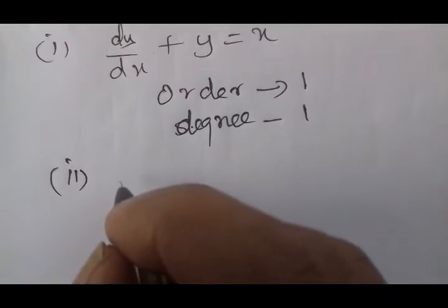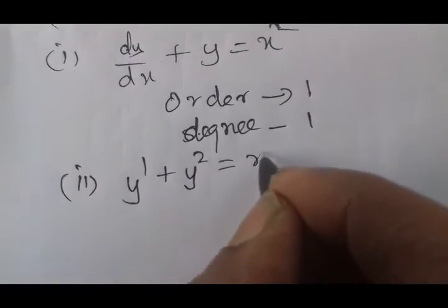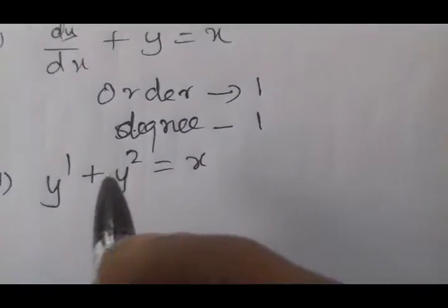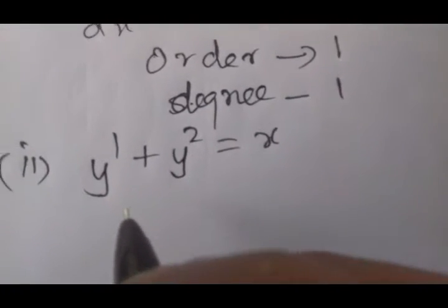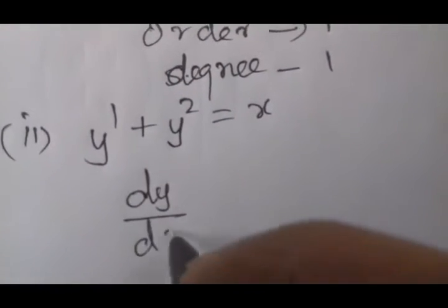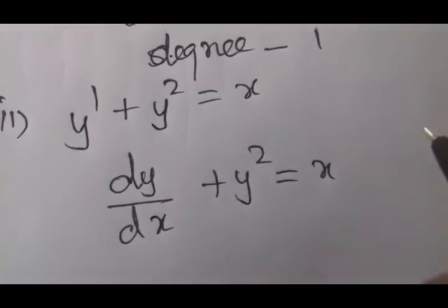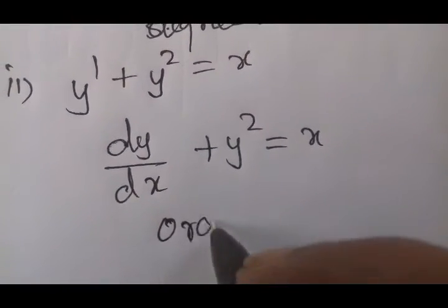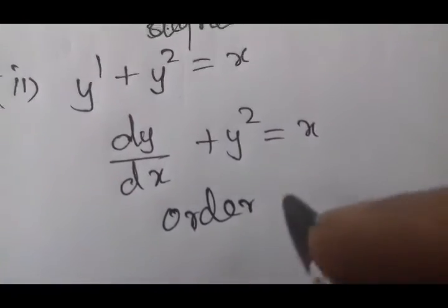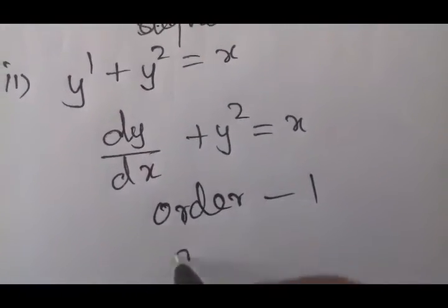y' + y² = x. This is simple. dy/dx plus y² equals 3x. Here the order — the maximum differentiation — is 1, so the answer is order 1, degree 1.